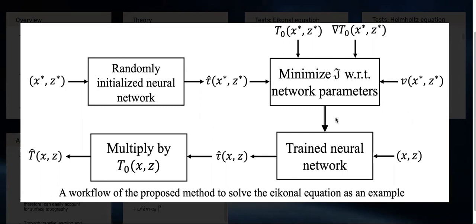Once you have that, it's called a trained neural network. Then you feed grid points corresponding to a regular grid, which gives you the unknown travel time part tau, which you multiply with T0 to get capital T. Similarly, the procedure is the same for the Helmholtz equation.